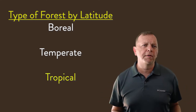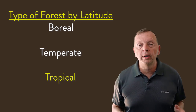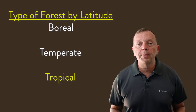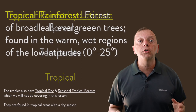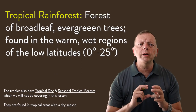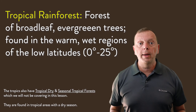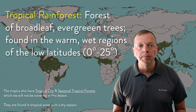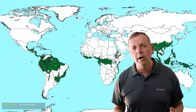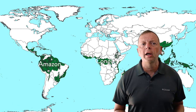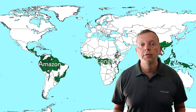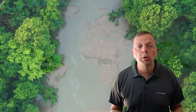Tropical forests are in the tropics, within 30 degrees of the equator. The most common type of forest there is the tropical rainforest, found in areas with a great amount of precipitation throughout the year. The Amazon rainforest in South America and the Congo rainforest in Africa are great examples of tropical rainforests. Tropical rainforests are nearly exclusively made up of evergreen broadleaf forests that support the world's most diverse ecosystem.